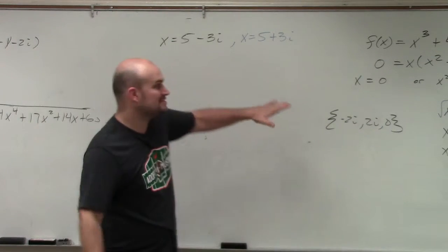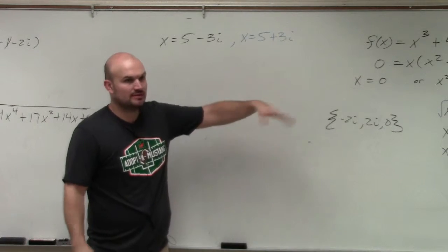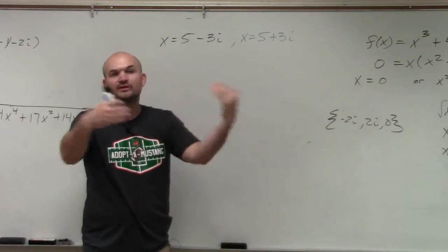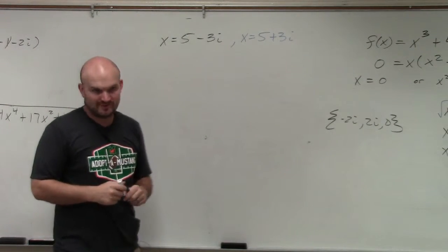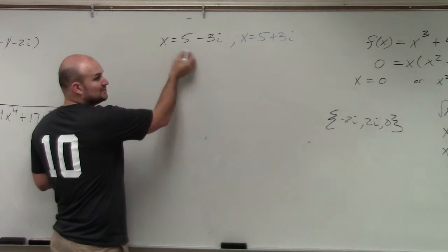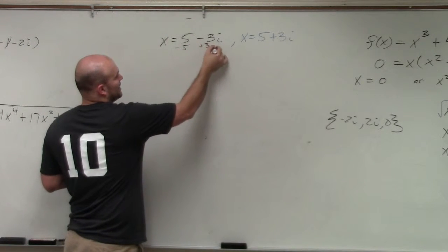So if you guys remember, this is just like the homework that we've been doing. You set them x equal to 0, then you write them as factors. We've done a couple of these. Now you set them equal to 0, so you subtract 5, add 3i.